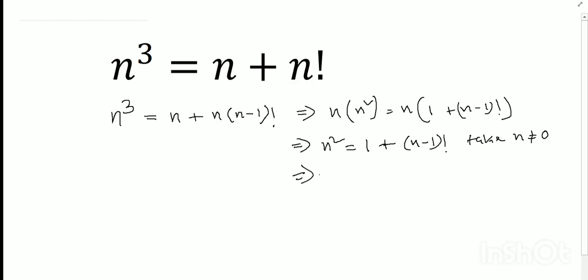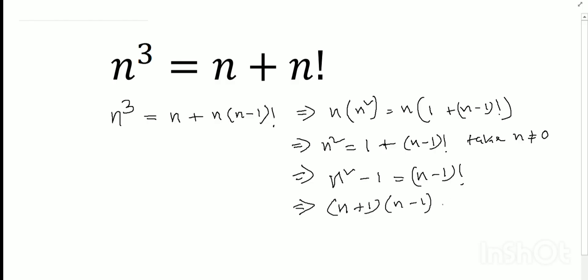Now, we can write n squared minus 1, which factors as (n minus 1) into (n plus 1). So (n minus 1)(n plus 1) equals (n minus 1) factorial.